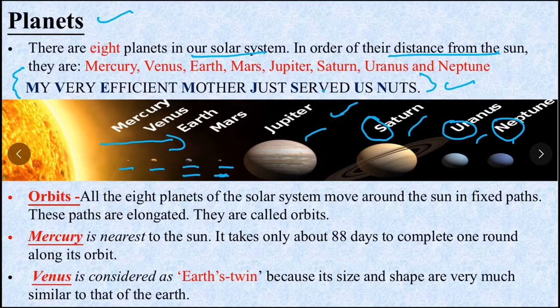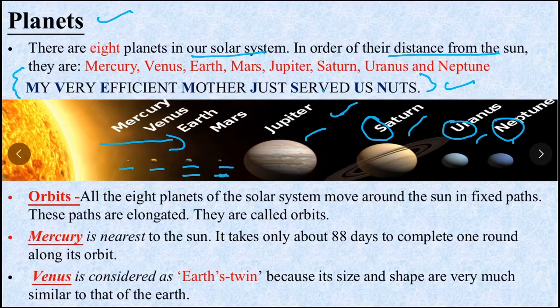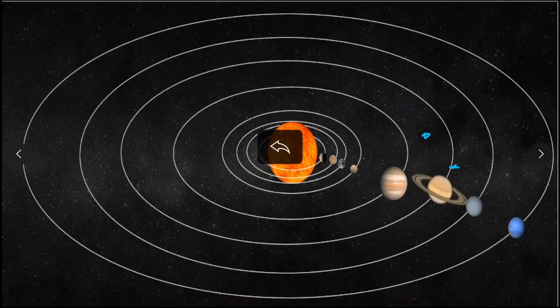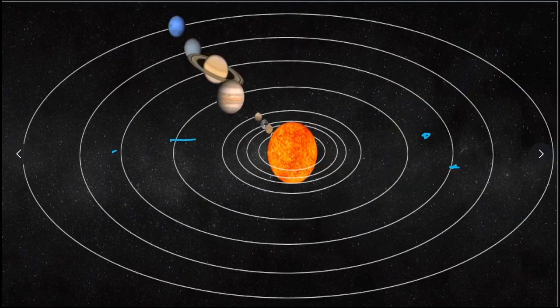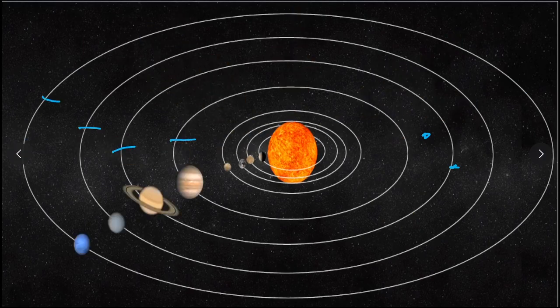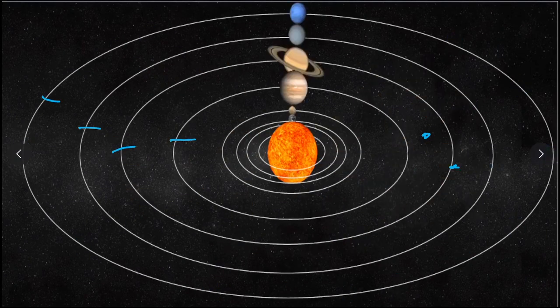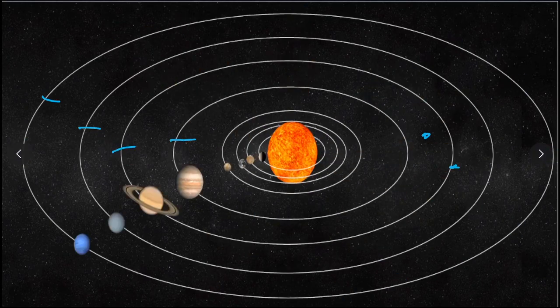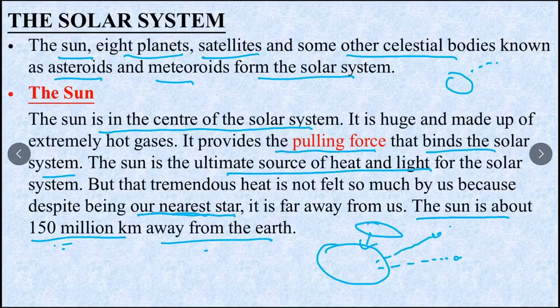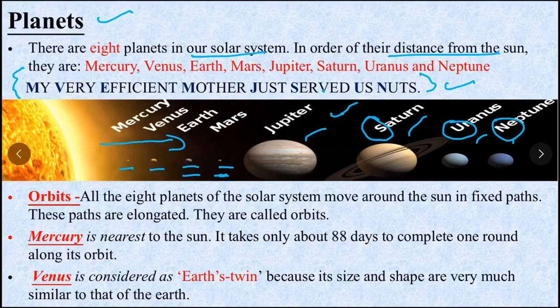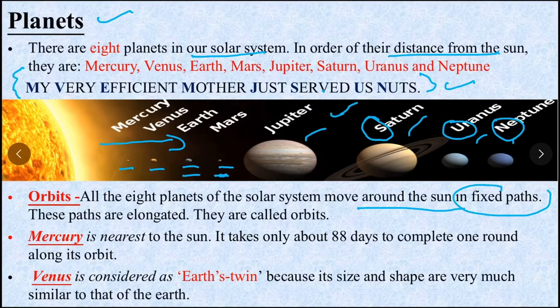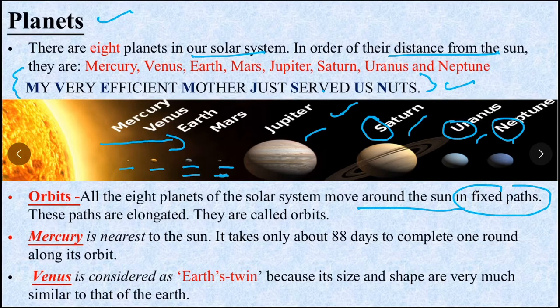Now the orbits. See these are the orbits - this is the path which planets follow. What is orbit? All the eight planets of the solar system move around the Sun in fixed paths. These are called orbits.